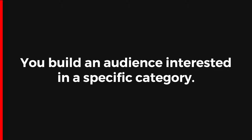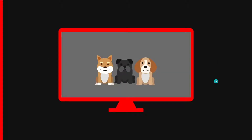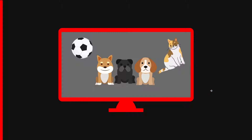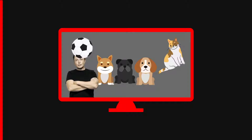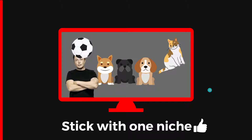Here is why you need a niche in the first place. The first reason is you build an audience that's interested in a specific category. If you have a YouTube channel and create videos about dogs, the people watching are probably into dogs. If you suddenly create videos about football, cats, or Elon Musk, most people who watched your previous dog videos will not be interested. Sticking with one niche is very important to build an audience.